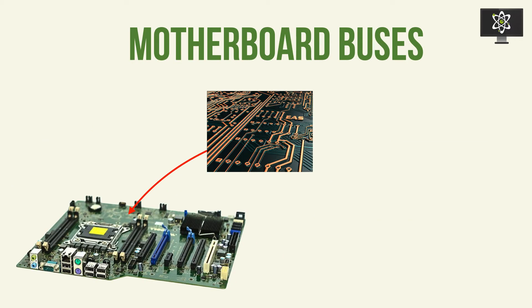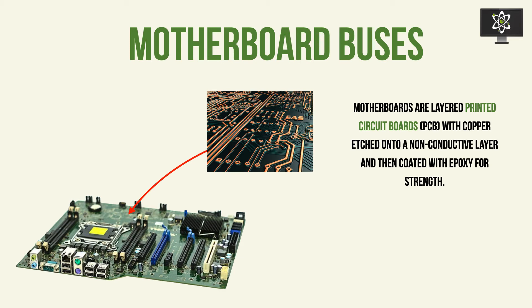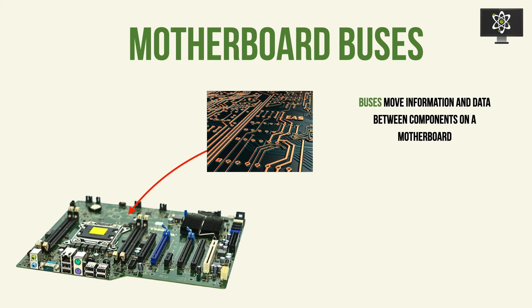The way in which data is transmitted to and from the components on a motherboard is via motherboard buses. Motherboards themselves are inherently printed circuit boards — printed circuit boards with copper wiring etched onto a non-conductive green layer that is the signature of motherboards. Once the copper is etched onto the green layer, it's coated by another layer of epoxy for strength. The copper wiring on the motherboard is how data is transmitted and received, and that is known as buses. Buses move information and data between the components on a motherboard.